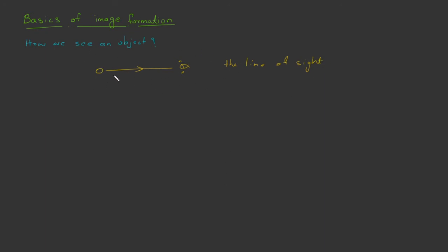So, if you want to see an object, then you must be in the line of sight. Now, we are going to see how we can see an image. We know light emanates from an object in a variety of directions — these we call rays of light. Some of these rays reach the mirror and reflect off the mirror according to the law of reflection. If we are in the line of sight of the image, then we are able to see the image. This is the basic concept of seeing an image.